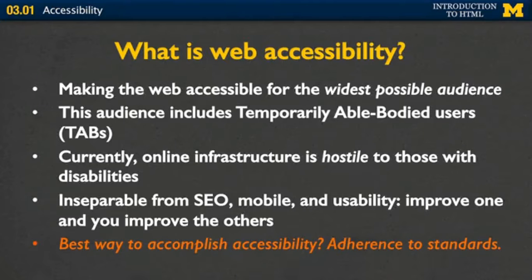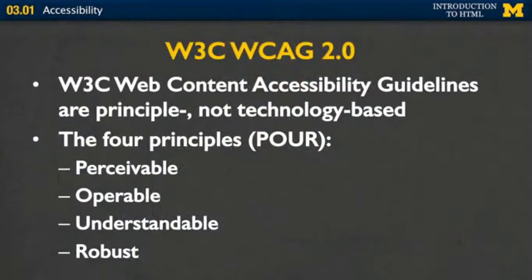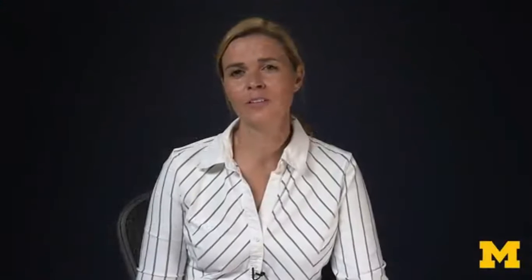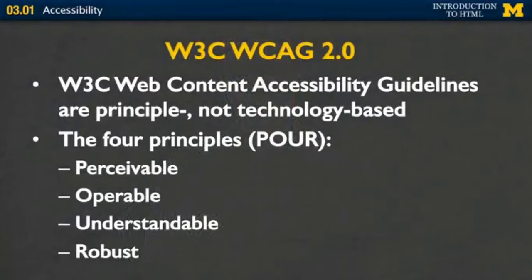So what's the best way to accomplish accessibility? It's adherence to standards. As you start now, you're at the very beginning of your web career — it's the perfect time to learn the best possible tags and the best possible ways to make your page accessible. These standards are going to come from the W3C Web Content Accessibility Guidelines, called WCAG. These guidelines are principle-based, not technology-based. You don't need to find the greatest language or technology to make your page accessible. Instead, you really just need to follow four principles as you design your sites: Is my site perceivable? Is it operable? Is it understandable? And is it robust? We'll be talking about these four principles throughout our entire course.